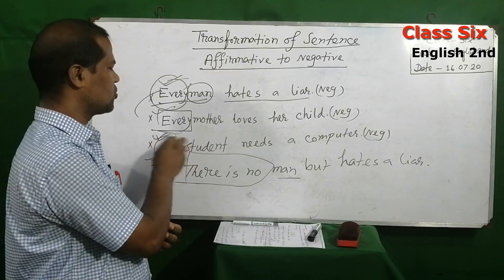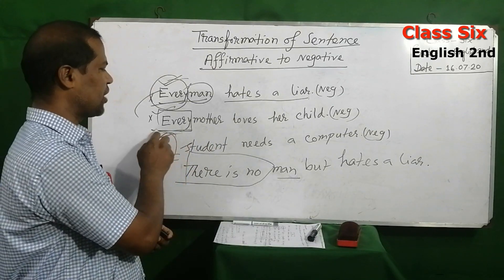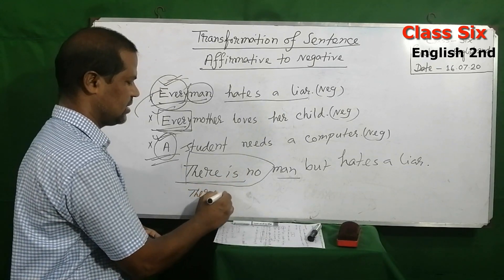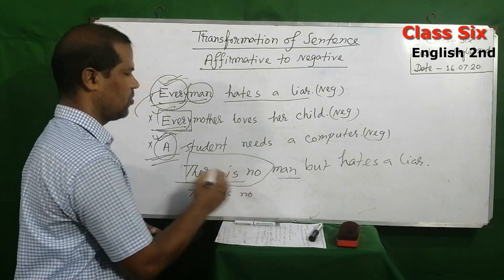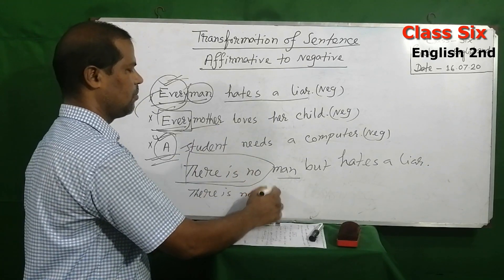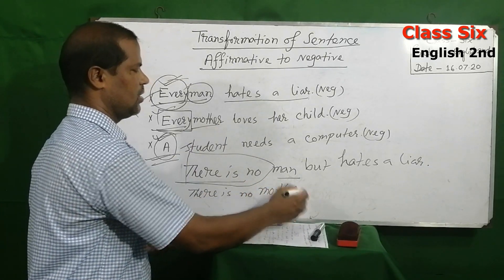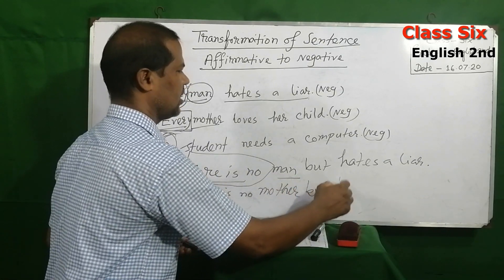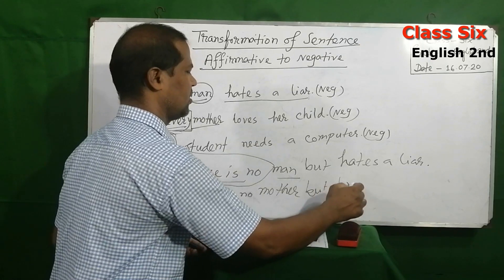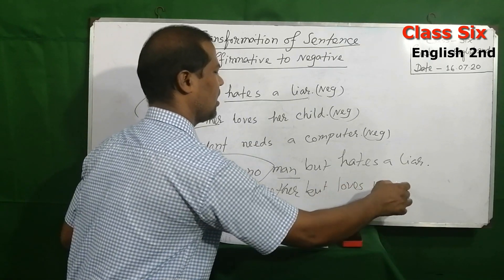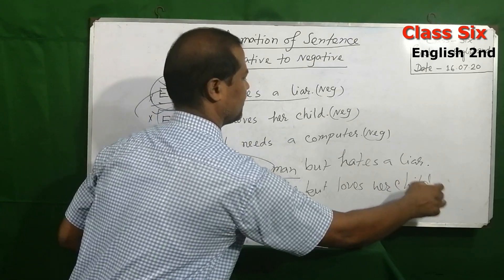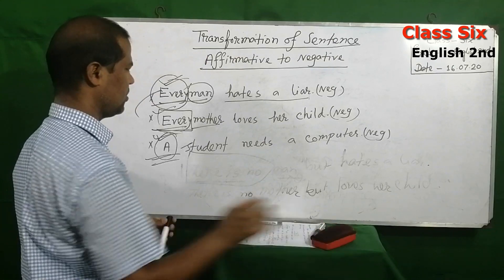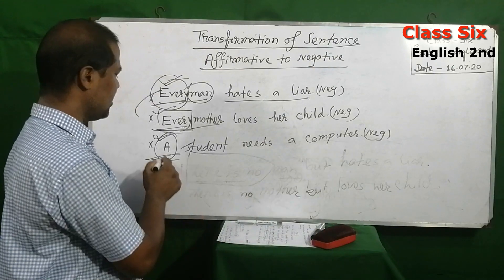In the same way, for the second sentence with 'every,' you write 'There is no mother, but loves her child.' Apply the same rule: replace 'every' with 'There is no,' keep the noun, add 'but,' then continue with the remaining part of the sentence.